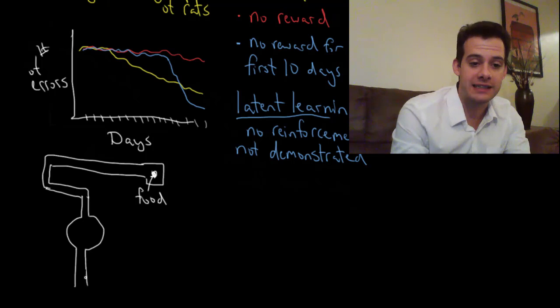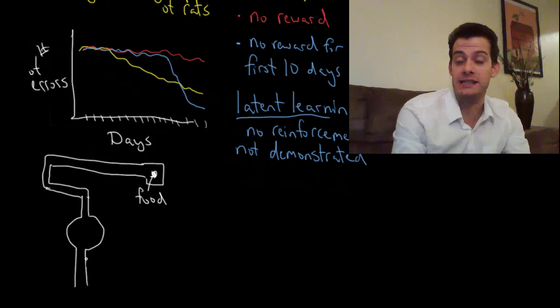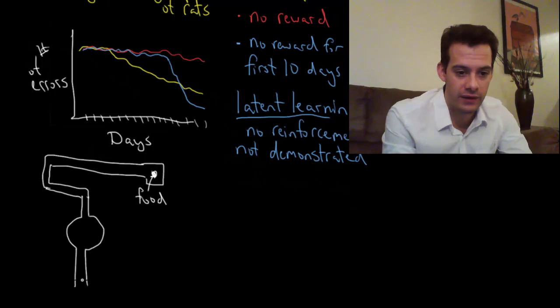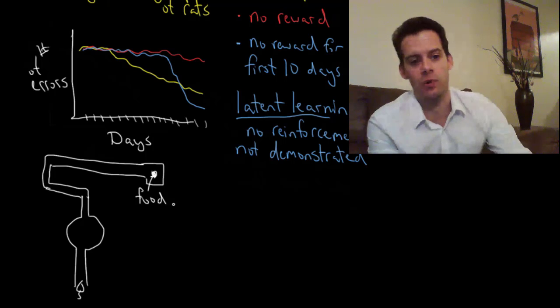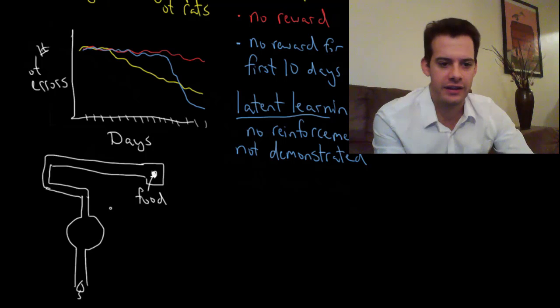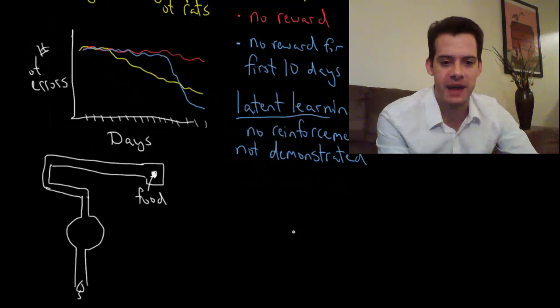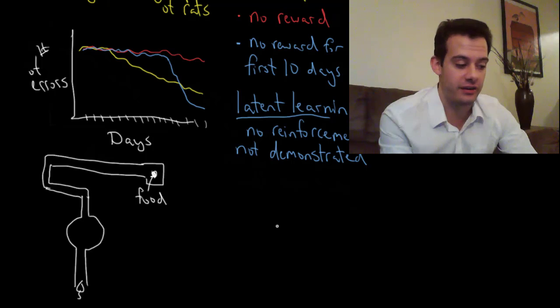They had rats complete this very simple maze. The rat runs in, goes straight through, turns left, turns right, turns right and gets to the food reward. Then after the rats had learned this layout of the maze, the researchers changed it a bit.